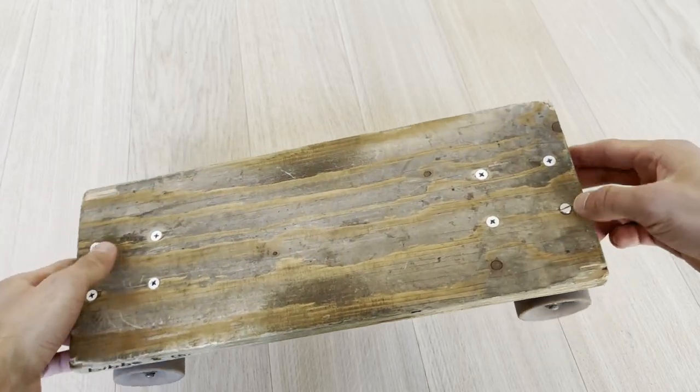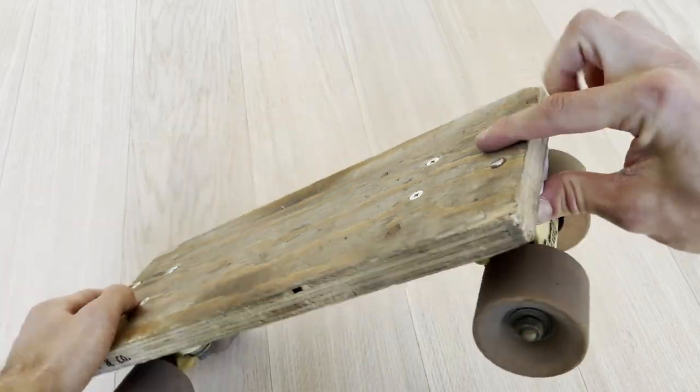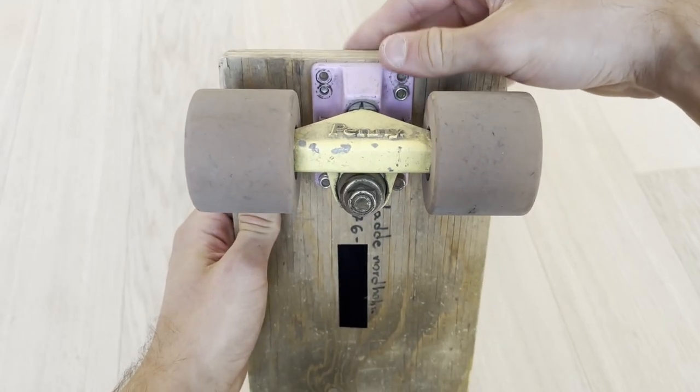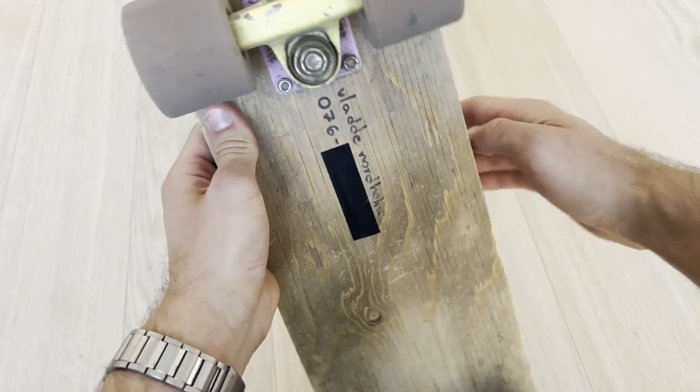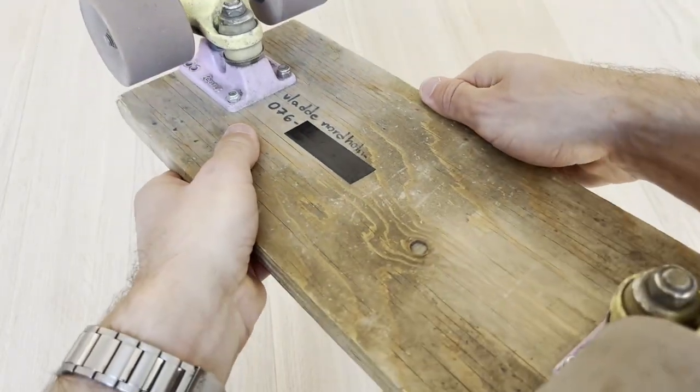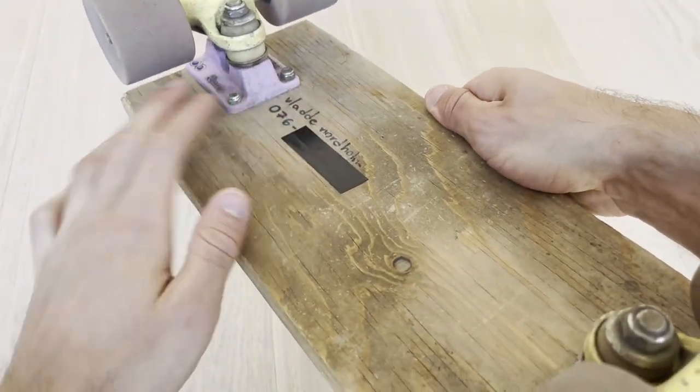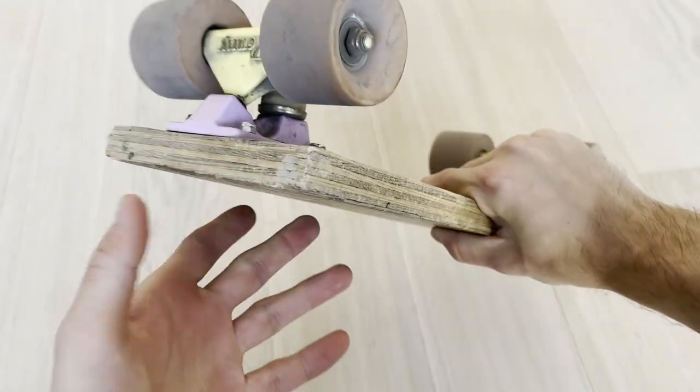Some days ago I lost this bolt, so I just took one I had lying around. It doesn't actually go all the way through, but it looks okay I think. I've lost some nuts underneath during the years, so some of the nuts are of different sizes, which means I can't use the same tool for all of them.